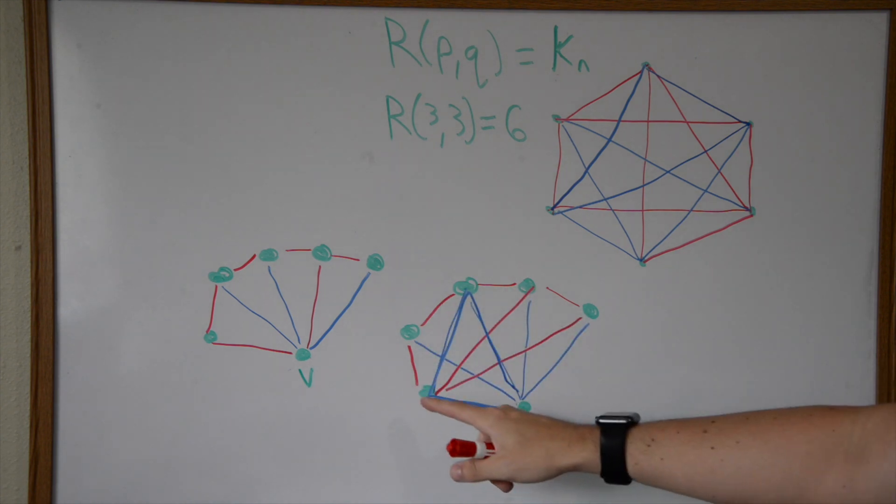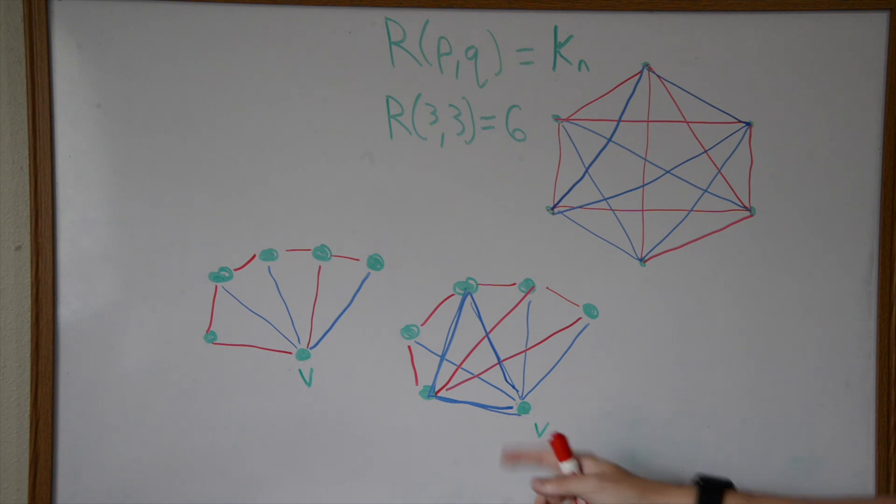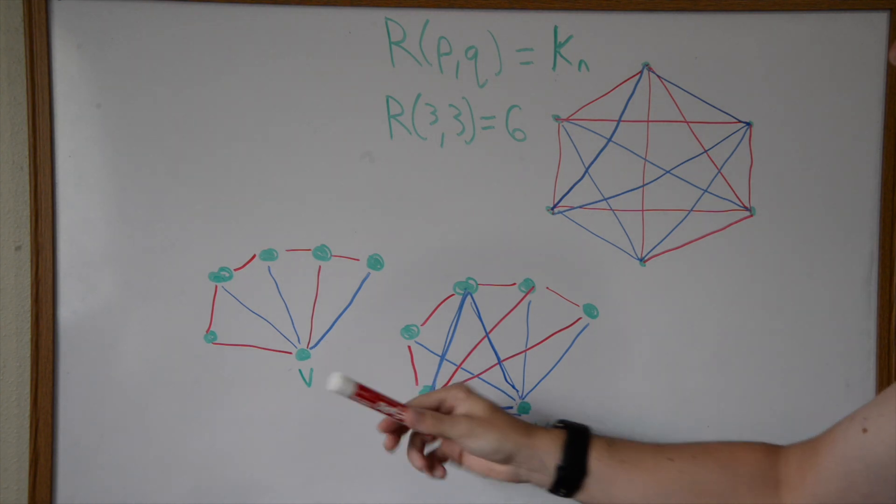If I had made this one red and this one blue it would have made a triangle here. If I'd made this one red and this one blue then it would have made a blue triangle. That also applies if all of these original incident edges to V were also red - we would just switch the color so we would have made a red triangle.